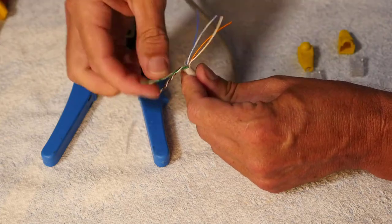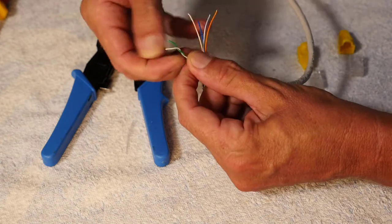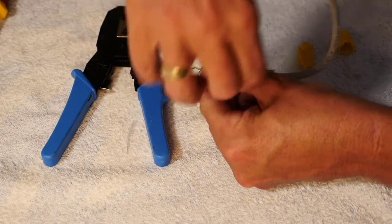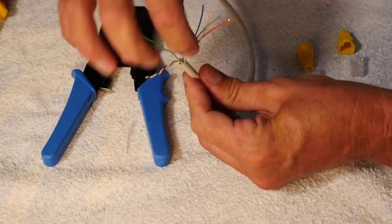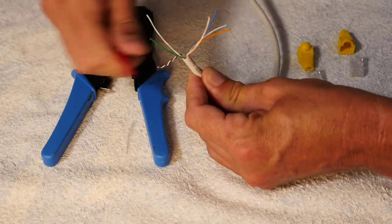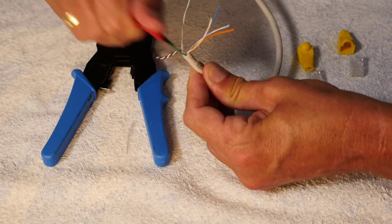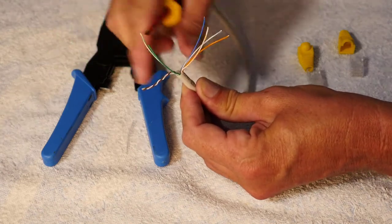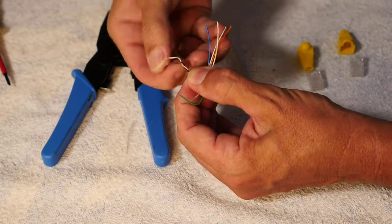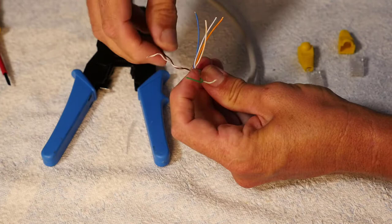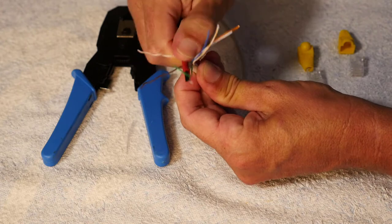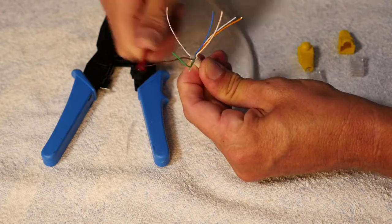Take the green and the white green, untwist these guys. It is a bit of a process. You can actually straighten them out together, but I'll just do them separately. So solid green and white green, and then we're going to do the solid brown and white brown. Straighten these guys out.